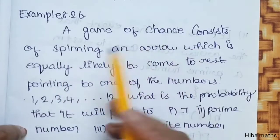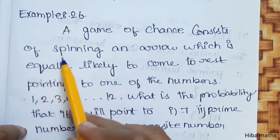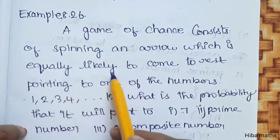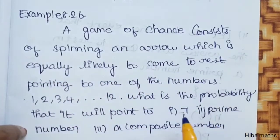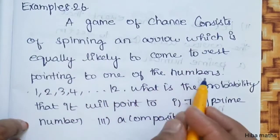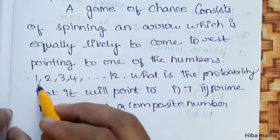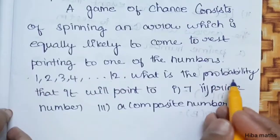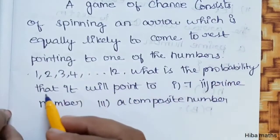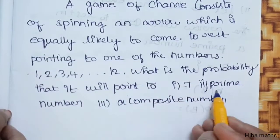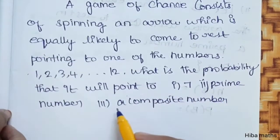A game of chance consists of spinning an arrow which is equally likely to come at rest pointing to one of the numbers 1, 2, 3, 4 up to 12. What is the probability that it will point to: a prime number, and a composite number?